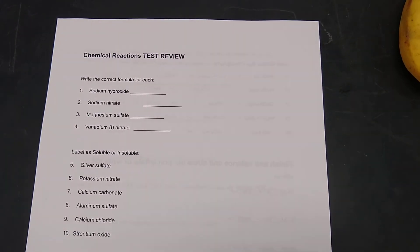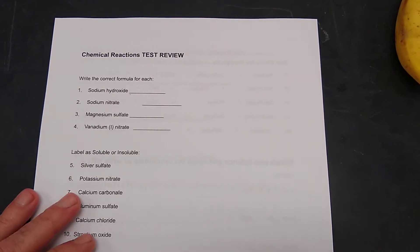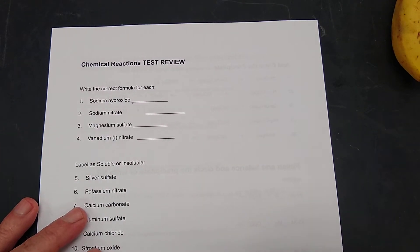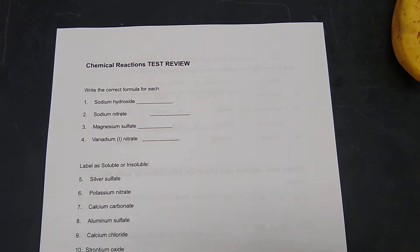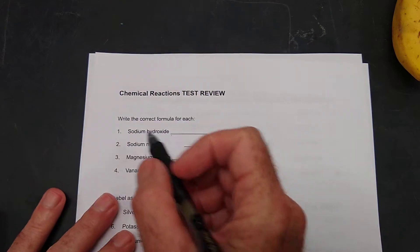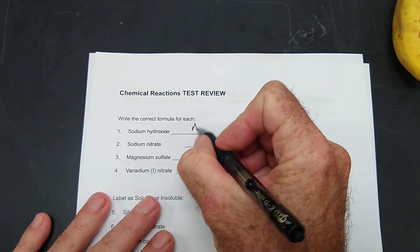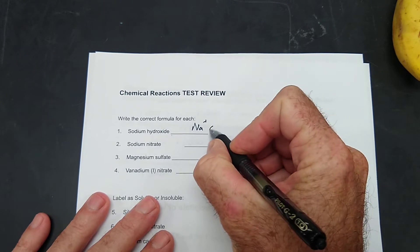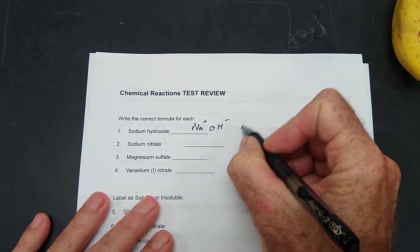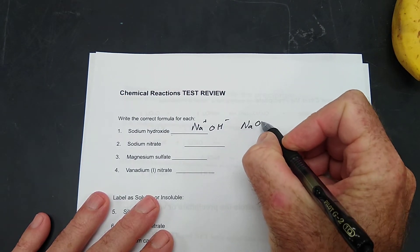All right people, let's do some of these review problems on this test. Let's see. Write the correct formula for each. Sodium hydroxide - sodium is plus one, hydroxide is minus one, so that's just NaOH.